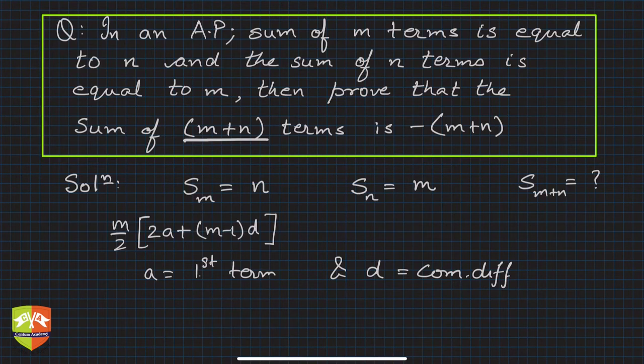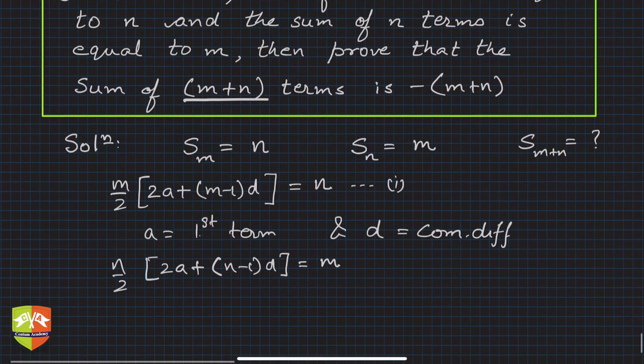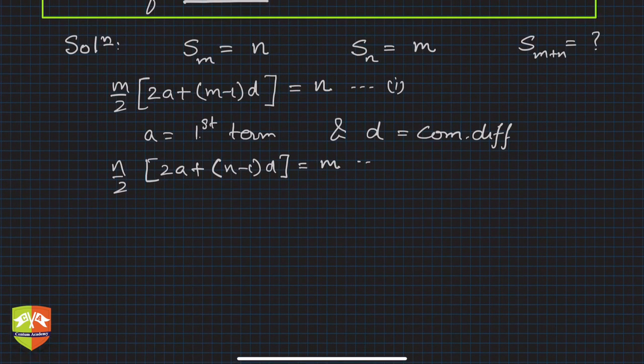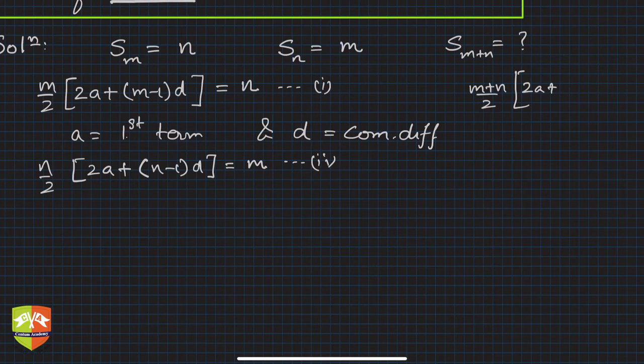And what is S_n then? This is equal to n, let it be equation 1. And n upon 2, 2a plus n minus 1 times d is equal to m. This is equation 2. Let's try and find out S_{m+n}, so what is S_{m+n}? Let's write it so that we have a track of what exactly we need: m plus n by 2, and we need 2a plus m plus n minus 1 times d. This is what we are looking for.